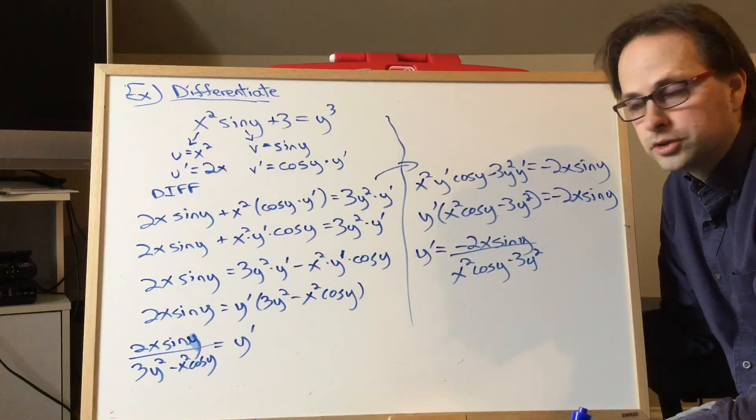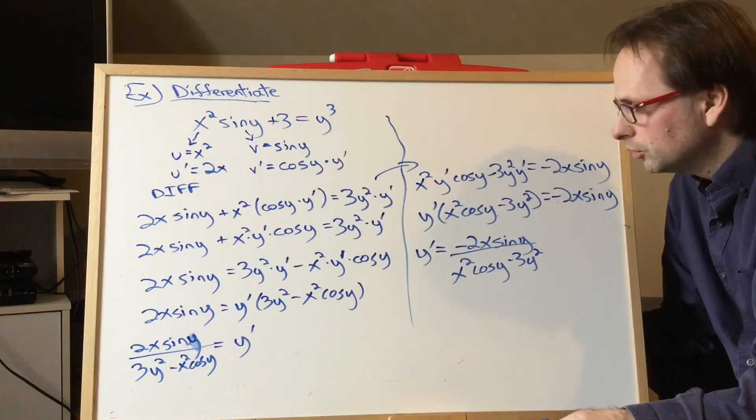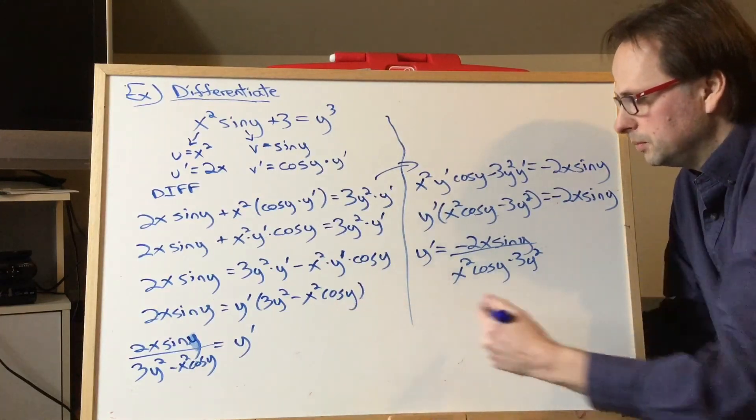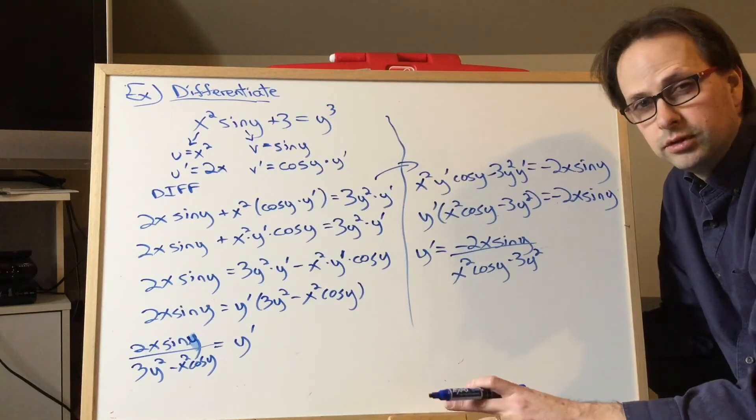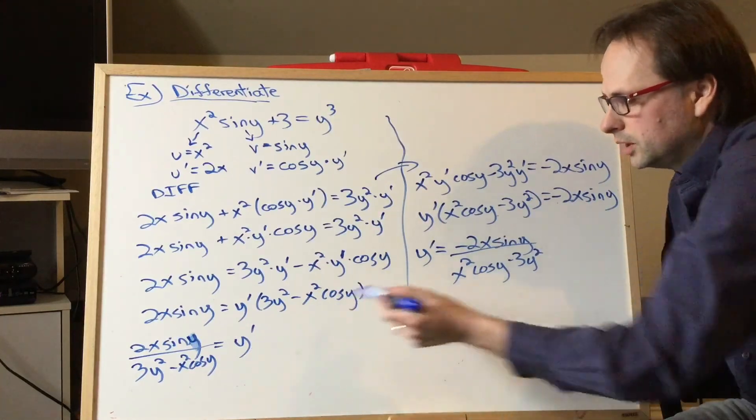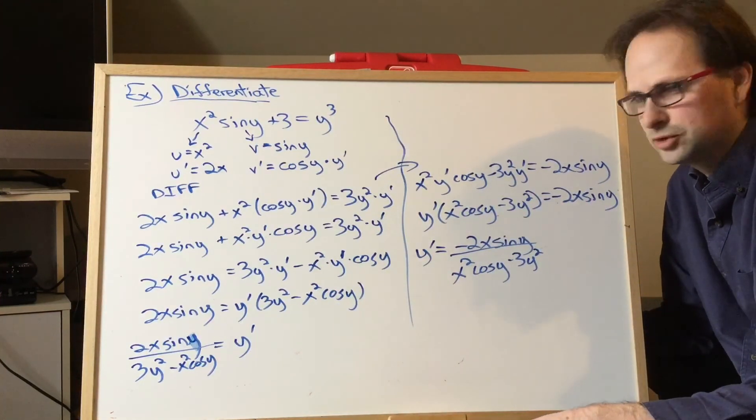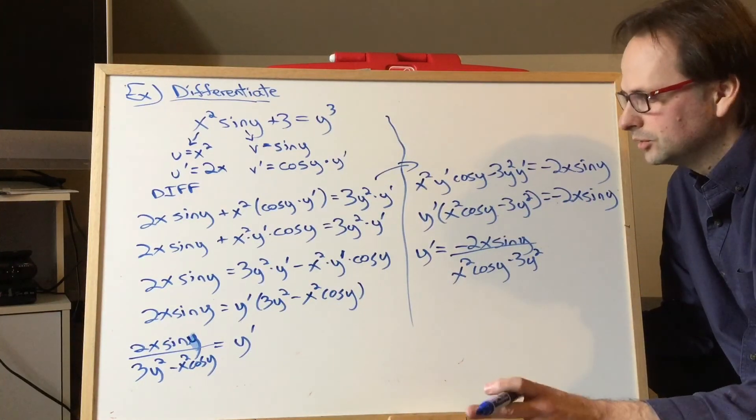You can see all the terms on top and bottom change from negative to positive or vice versa, but it still means the exact same thing. If you sub in any ordered pair into this one or this one, it'll give you the same slope. Either way is good.